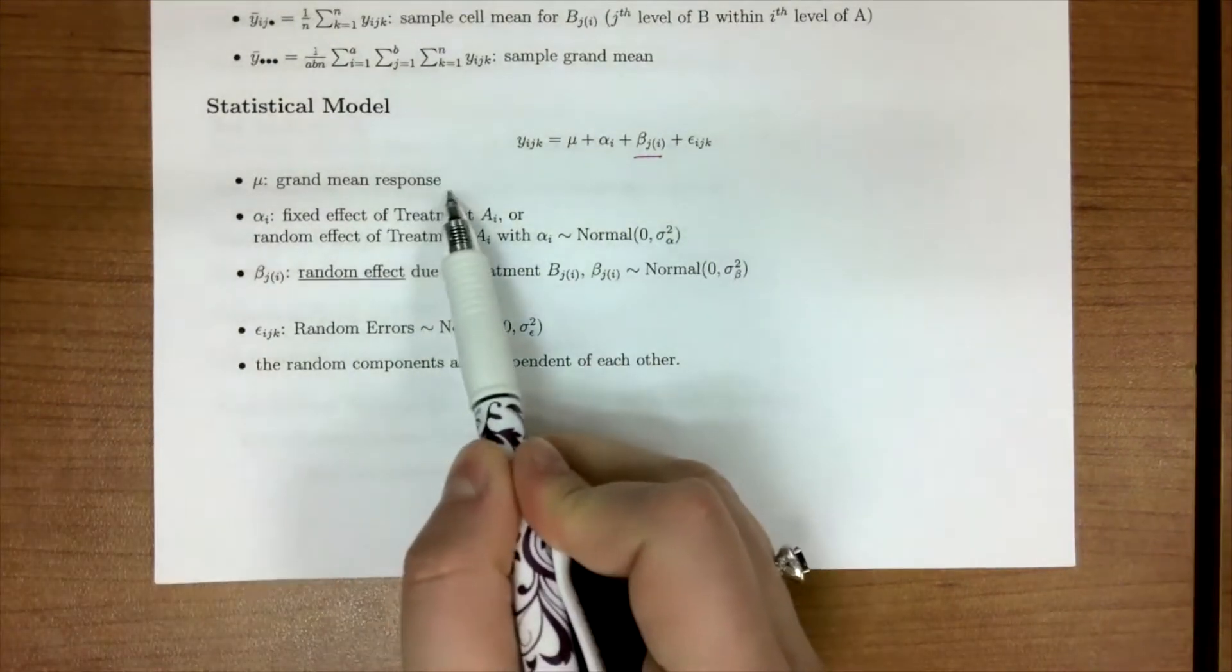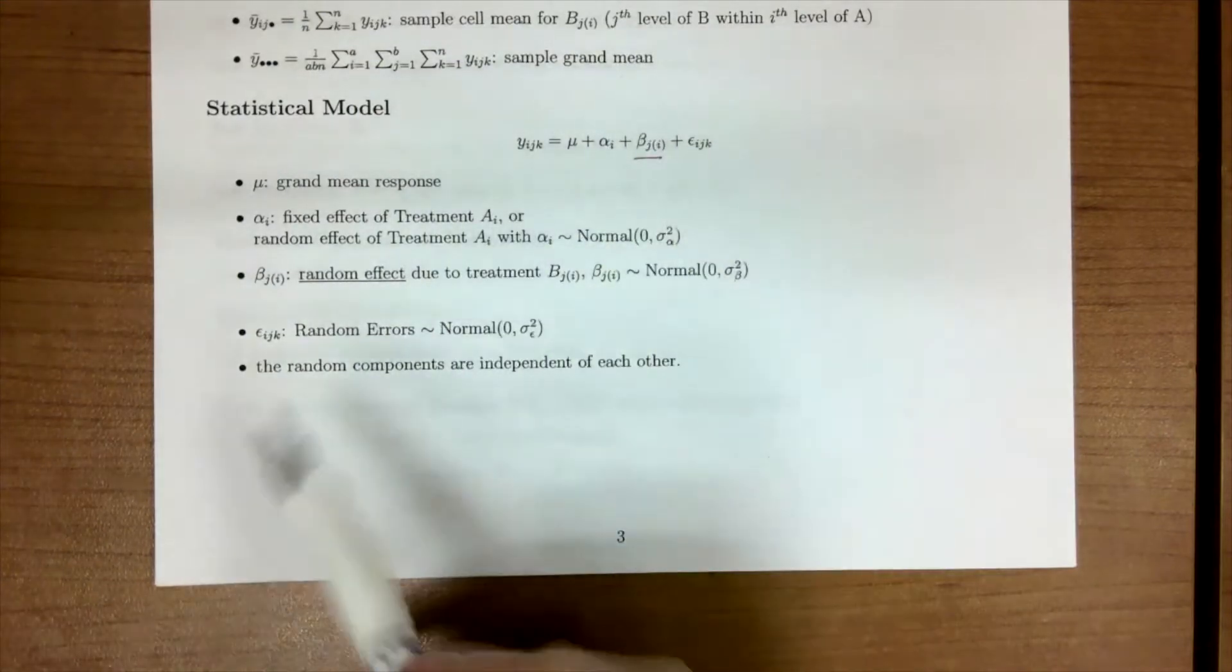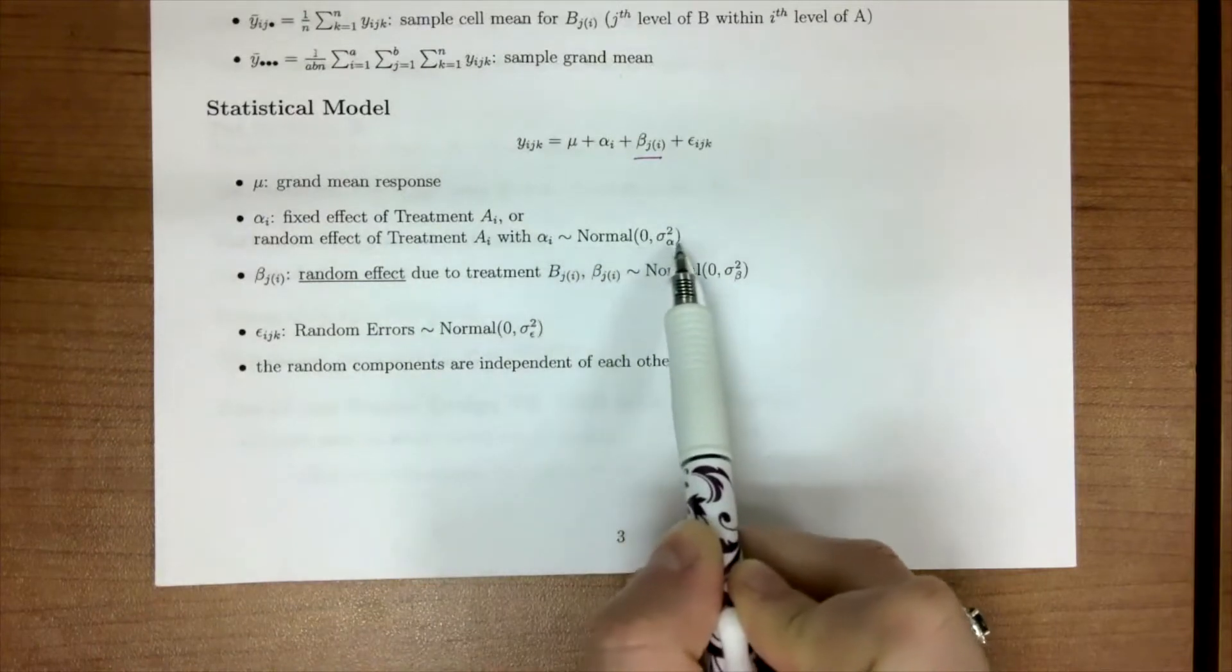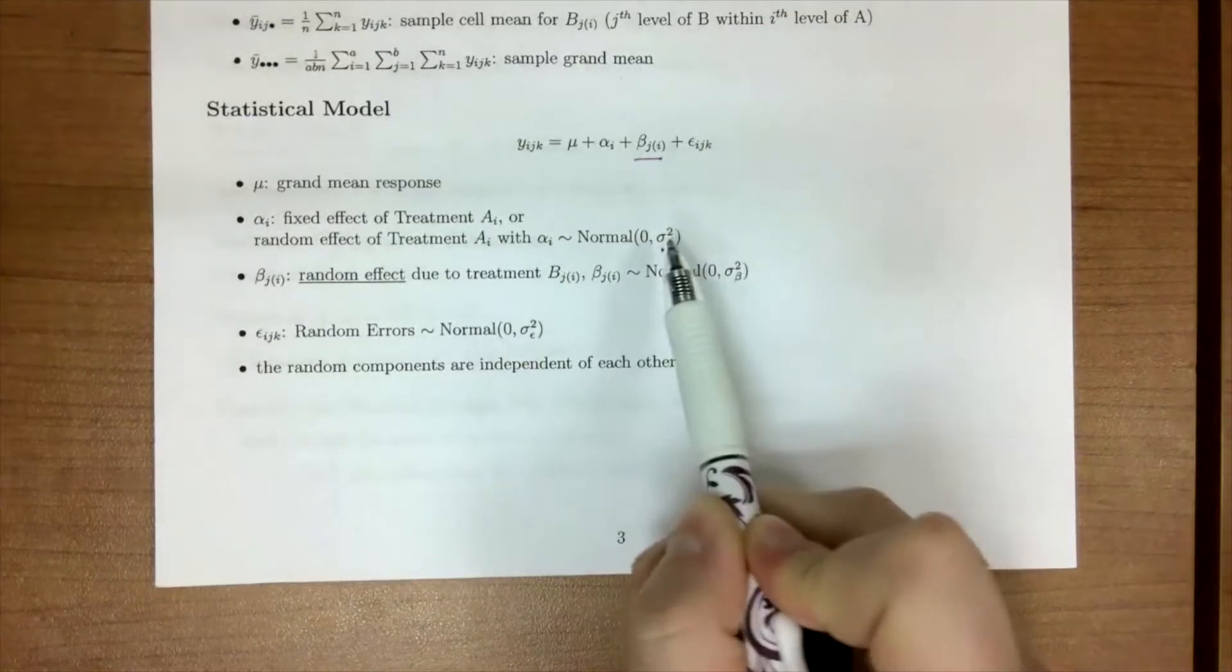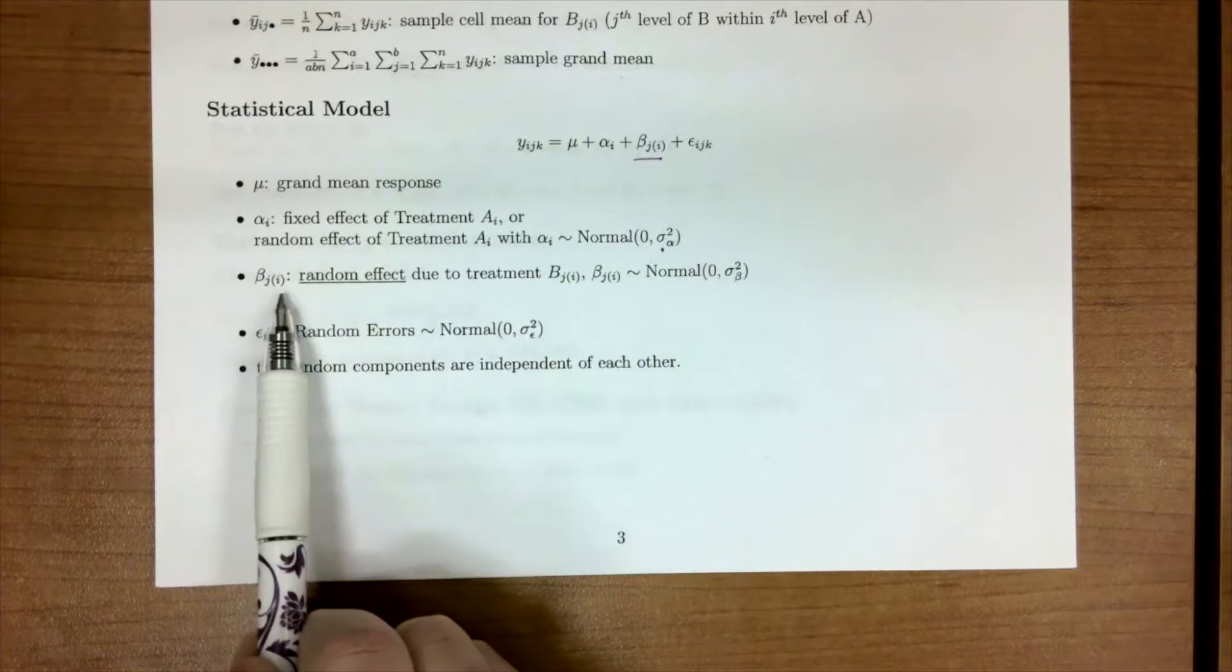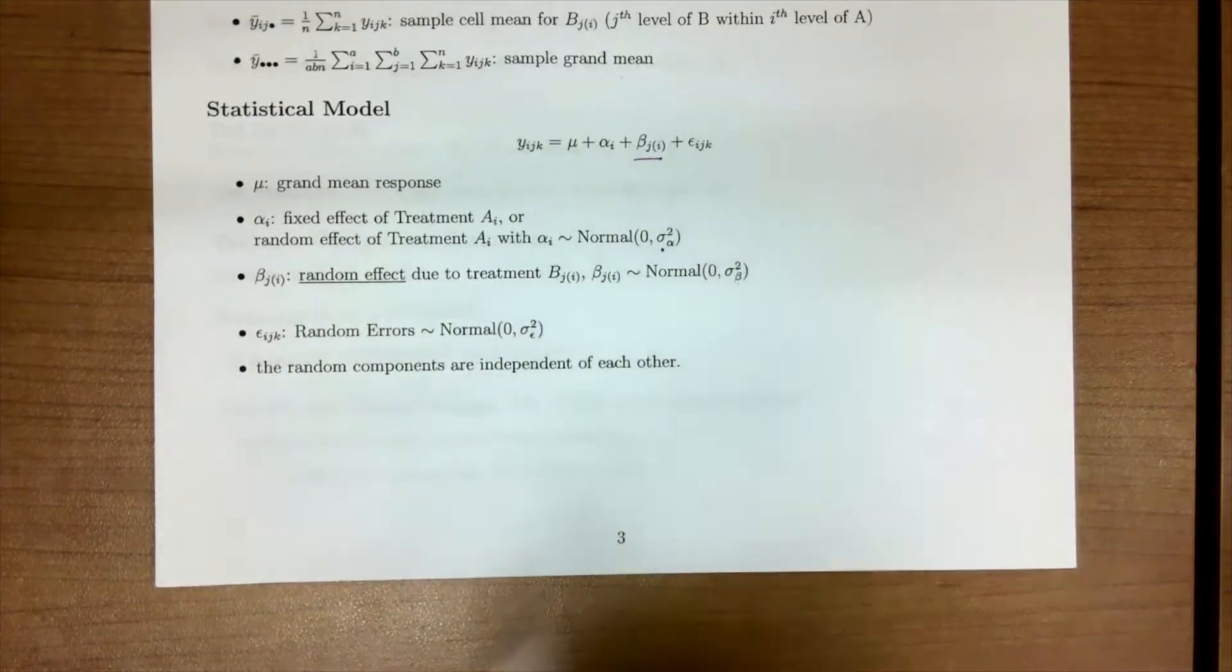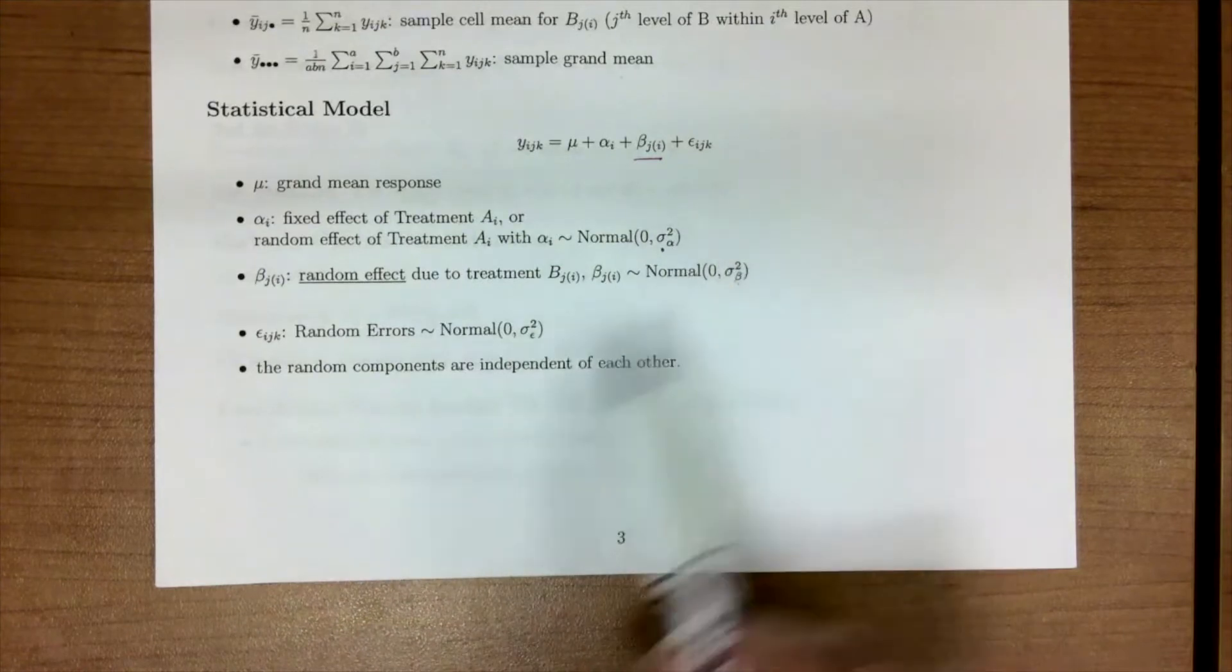We still have our grand mean. Now again, our α_i can be random or fixed. If it is random, don't forget that it has a distribution on it, and then we would go about estimating our variance term. Our β_{ji} is a random effect, does have this distribution, and so we are going to have to estimate this, and then we have our random error. We assume that the random components or variances are independent of each other.